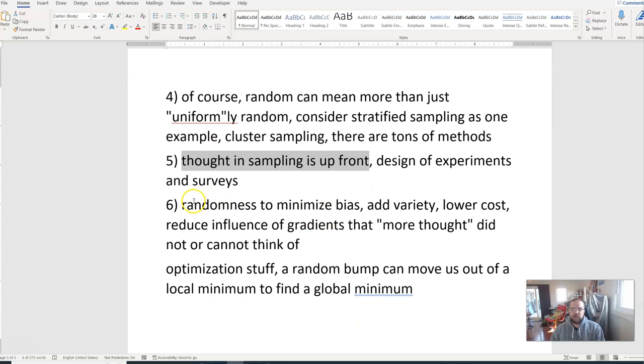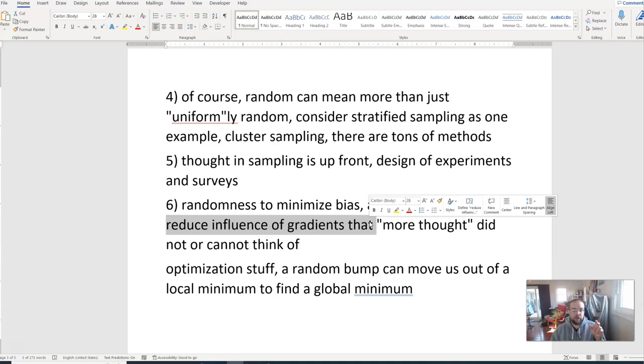Something else that we know is randomness. Let me put it this way. Humans when they do something add bias to a process. If I'm doing an experiment on some type of drug treatment and it's just me giving people that I choose a treatment and stuff, first of all it's hard to replicate. Second, I could be either consciously or subconsciously introducing bias in a process. So randomness, one of the main things, it helps minimize that bias in assigning treatments and taking samples. It of course can add variety. I already mentioned lower cost. One of the main things is in general it reduces the influence of gradients that this kind of vague more thought either did not or cannot think of.